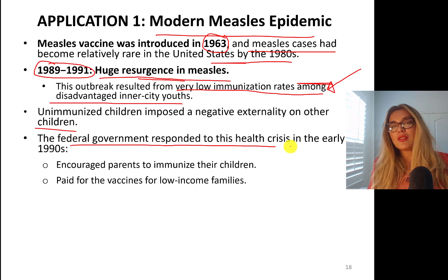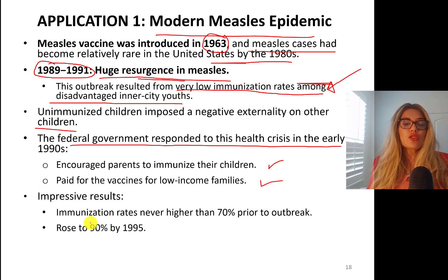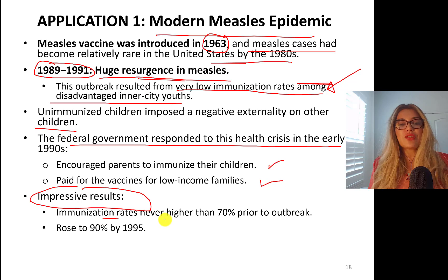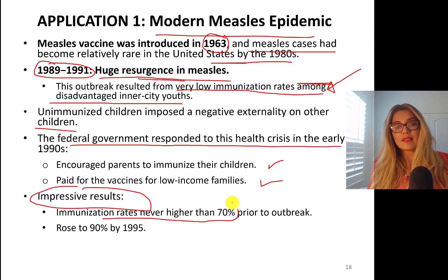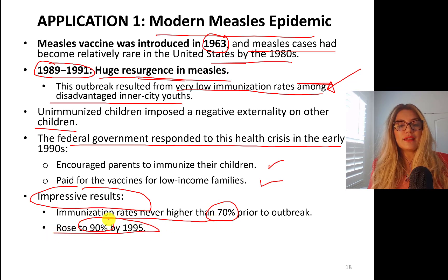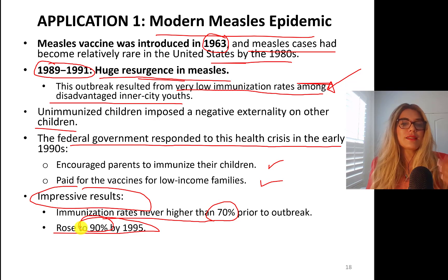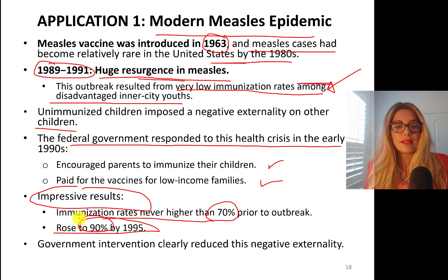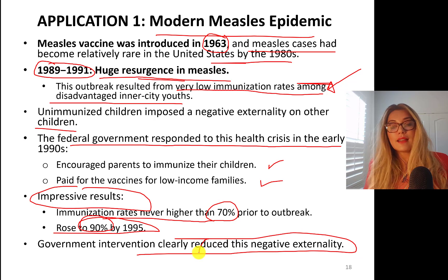The federal government responded to this health crisis in the 1990s, encouraging parents to immunize their children and paying for vaccines for low-income families. The results were significant: immunization rates, which were higher than 70% prior to the outbreak, rose to 90% by 1995. You can't get 100% compliance, especially nowadays due to the anti-vaccination movement, but government intervention clearly reduced the negative externality caused by lack of resources or information.